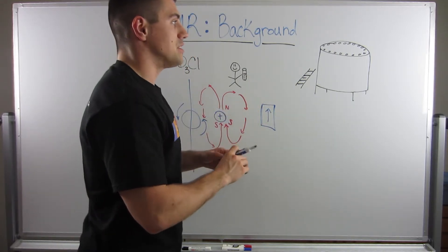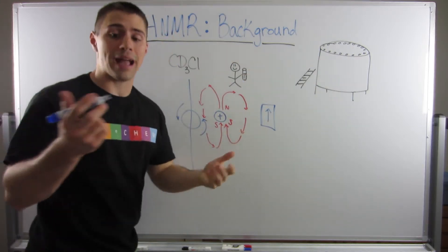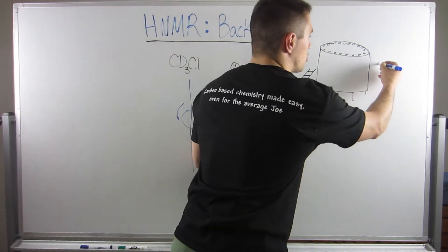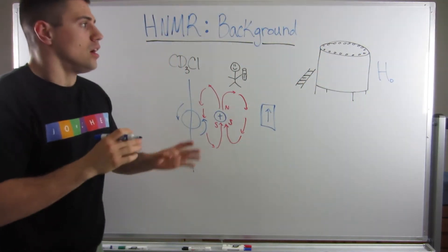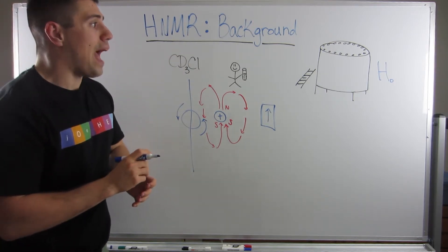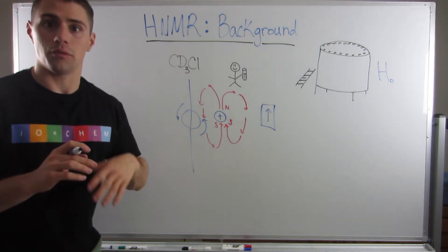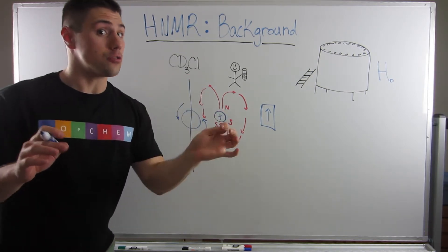Okay. So inside this machine, what happens is the machine generates its own magnetic field, its own external magnetic field, where in lecture, your teacher will probably use an H naught, an H sub zero. Here's why the machine does that. What will happen is whatever your structure looks like, wherever all the hydrogens, right, a.k.a. hydrogen nuclei.